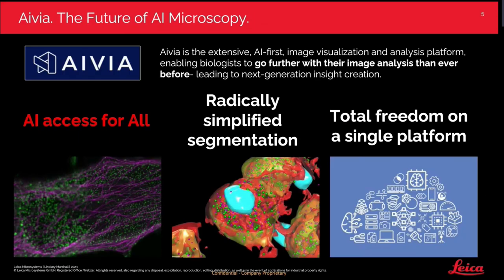So what is Avia and how can it help? Avia is an image visualisation and analysis software that uses artificial intelligence to simplify key steps in the image analysis pipeline. Avia offers an entry point to AI usage in image analysis. Our development team focuses on making the integration of AI tools — machine learning and deep learning — as easy as possible, with no computer science or scripting expertise required, although custom scripts are possible.